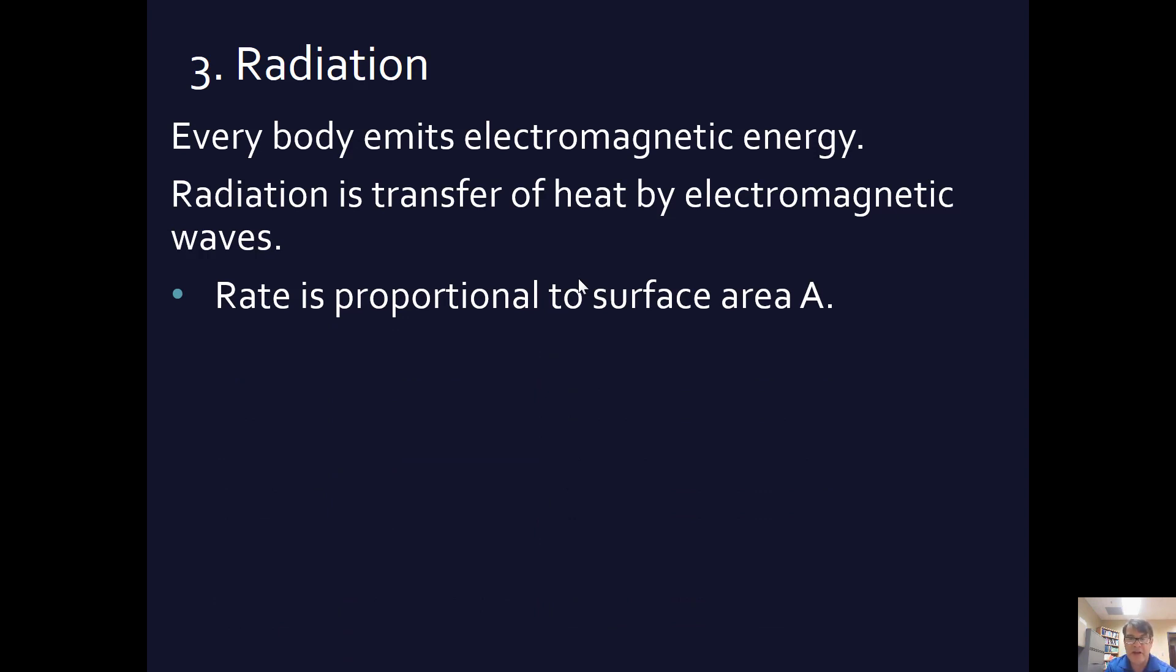This rate is proportional to the surface area of the thing that's radiating or absorbing. Those are the two: radiating is when the heat is coming out. Absorbing is when the heat is going in. So this rate is going to be proportional to the surface area. It's going to be proportional to the fourth power of temperature Kelvin. So it spikes according to the fourth power. The more the temperature, the more the radiation.